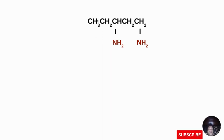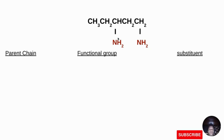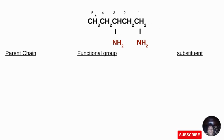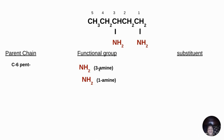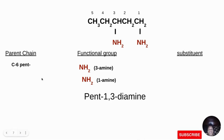For the next amine example, we are given CH3-CH2-CH-CH2-CH2 with two NH2 groups. The same process applies. We count to give 5 carbons, so the parent chain is 'pent'. The functional group NH2 is at carbon 1 giving '1-amine', and another NH2 is at carbon 3 giving '3-amine'. There is no substituent. Since we have two amine groups, we use the prefix 'di'. The name of the compound is pentane-1,3-diamine.